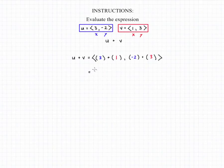And if we work that math out we'll have our final answer which is that the vector u plus v is equal to 4 comma 1.